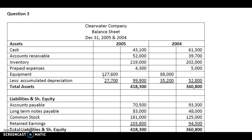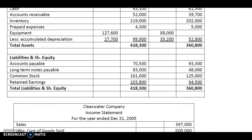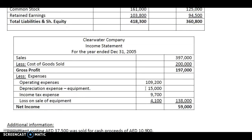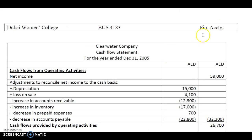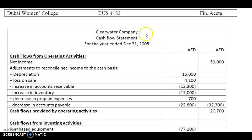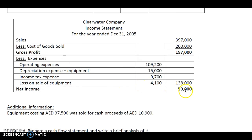I will now take you through the solution for question 3, that is Clear Water Company. Here also they have given you the balance sheet for 2004 and 2005, and the income statement. As we did the cash flow statement for the previous question, here also we do the cash flow statement under three headings. But before that, always make it a point to write the name of the company and the statement that you are preparing, followed by the date. Let's begin with cash flow from operating activities. You begin with the net income, which you bring forward from the income statement: 59,000 as you can see here.